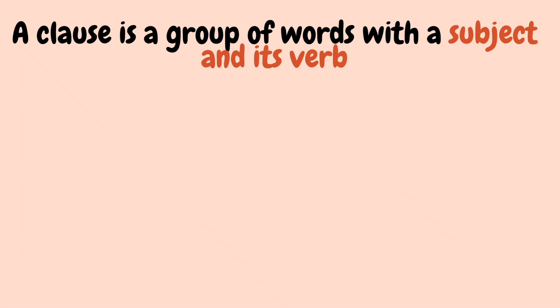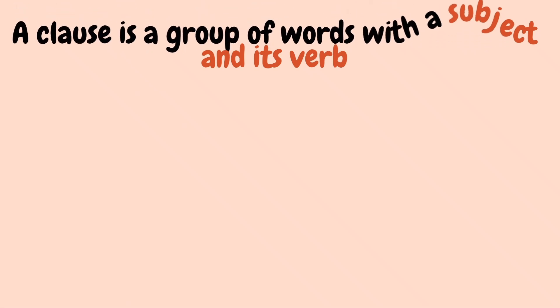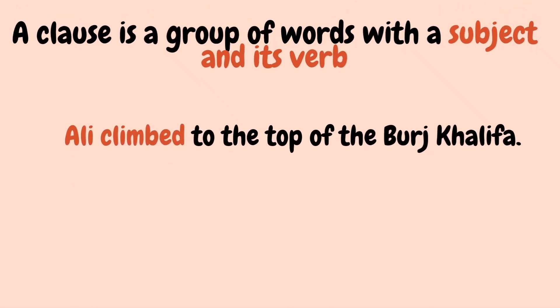Now how is a clause different? A clause is a group of words with a subject and its verb. Look at the sentence: 'Ali climbed to the top of the Burj Khalifa.' Your subject is Ali and your verb is 'climbed,' so your clause will be 'Ali climbed.'